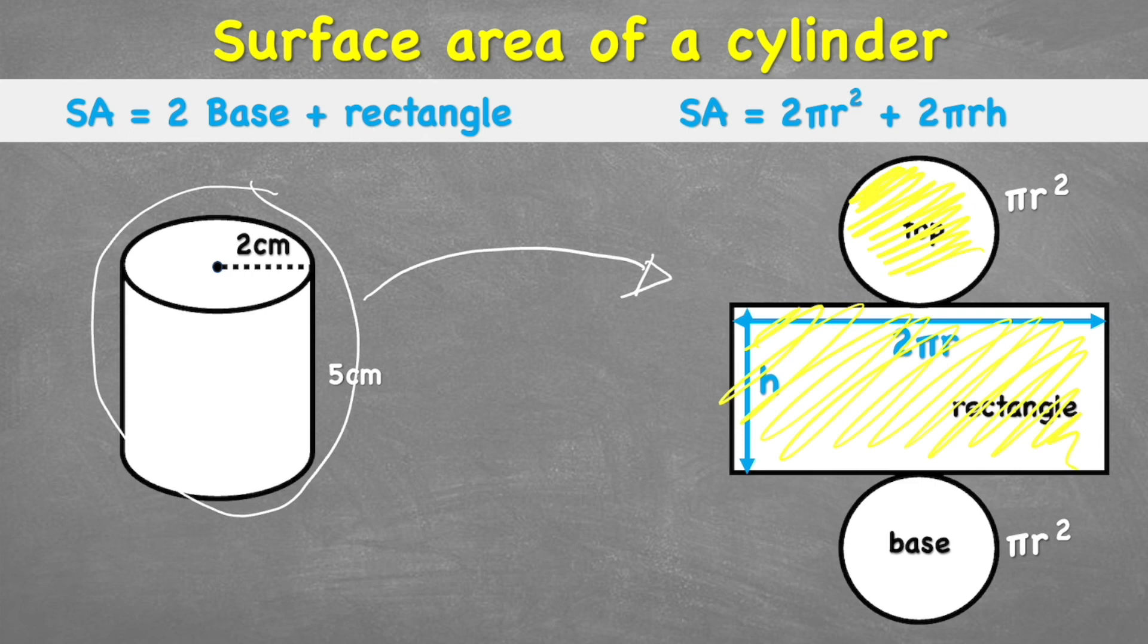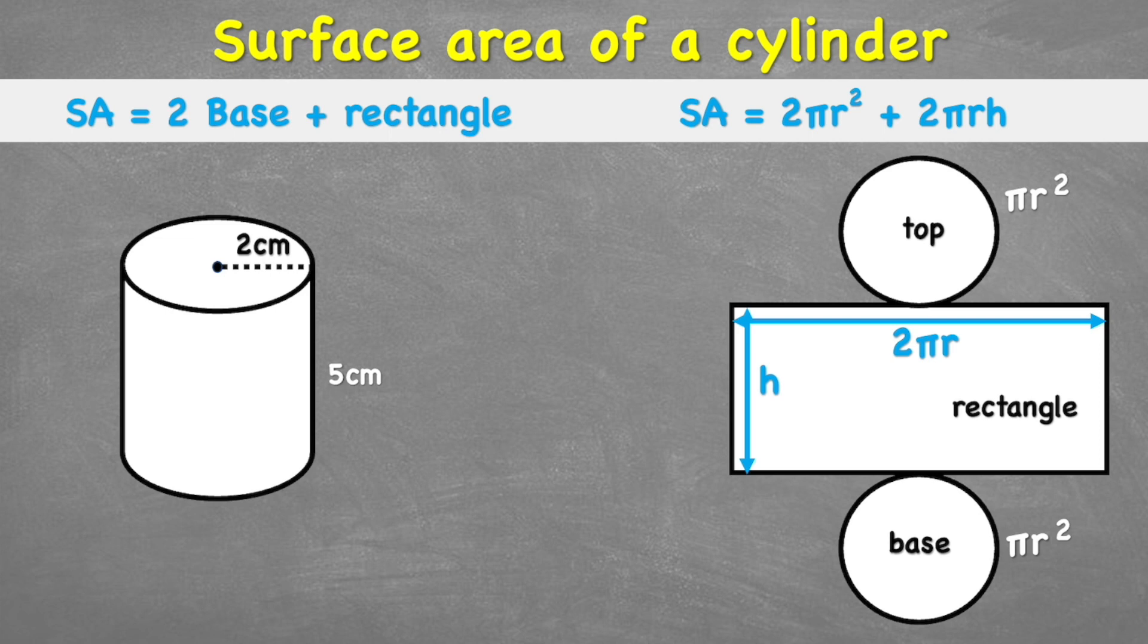One way of looking at it is how much area would this shape take up on a surface? We can see that we're going to have to measure all of this internal space. And a cylinder is a 3D shape with a top and base, which are circles, and a rectangle that's wrapped around it, forming the cylinder shape.